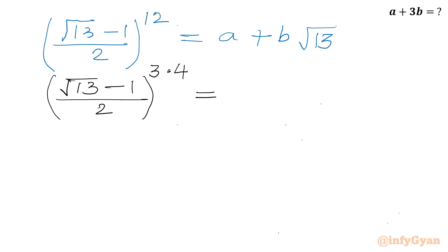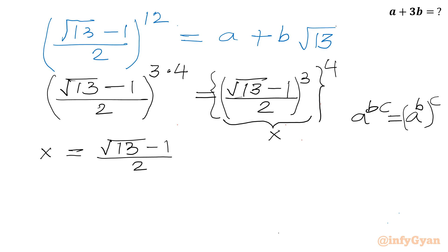So we know the property of exponent. It is a power b times c. Anytime we can write a power b whole power c. So let us write. I will be writing root 13 minus 1 over 2 whole power 3, and then whole power 4. Let us simplify this curly bracket first. Let me call this as x. So I can write x equal to square root 13 minus 1 over 2 whole cube. So a minus b whole cube and denominator is 8. 2 cube is 8.